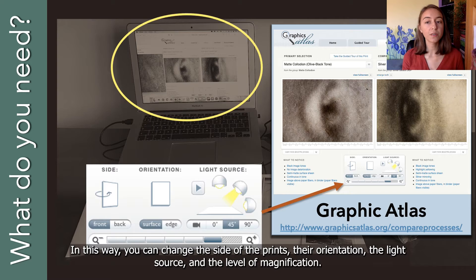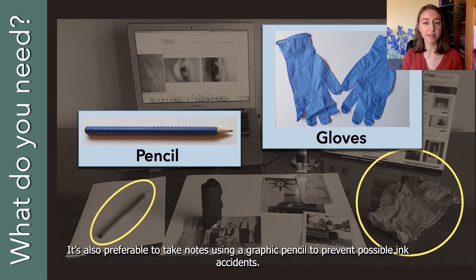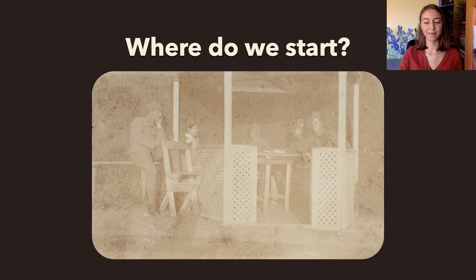In this way you can change the side of the prints, their orientation, the light source, and the level of magnification. Last but not least, you should always work on a clean surface and prevent touching the image layer, so it is strongly recommended to wear gloves. It's also preferable to take notes using a graphite pencil to prevent possible ink accidents. In the following, I will present the basic steps of the identification process.